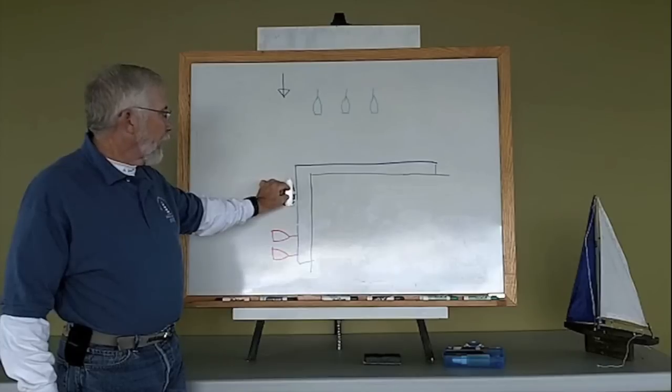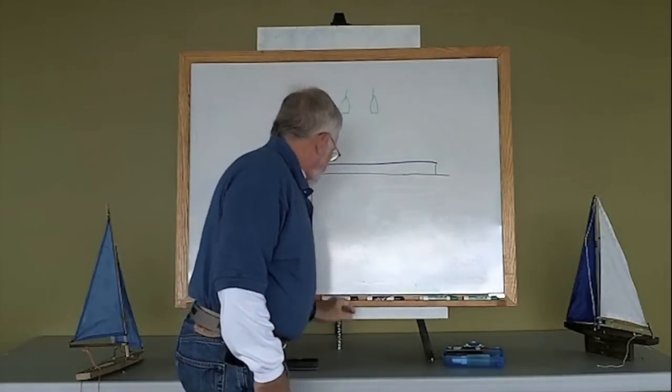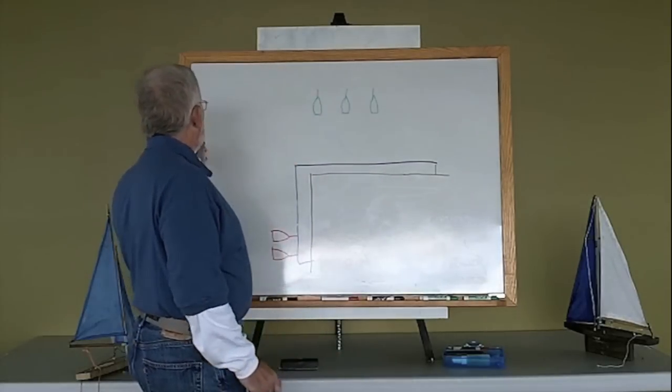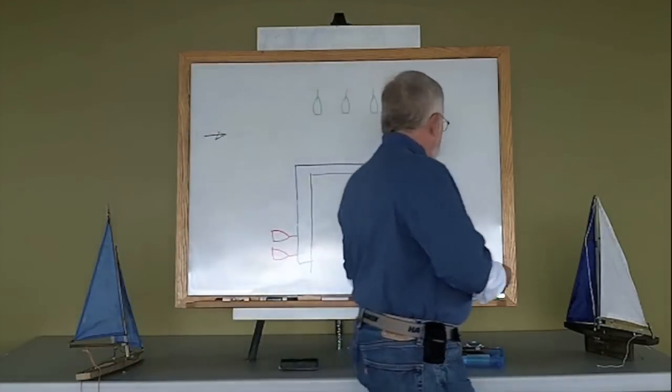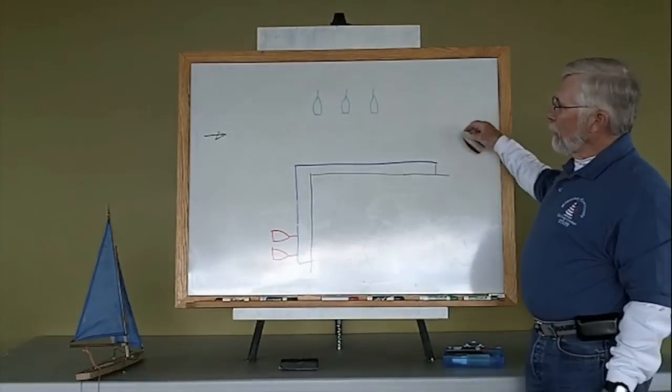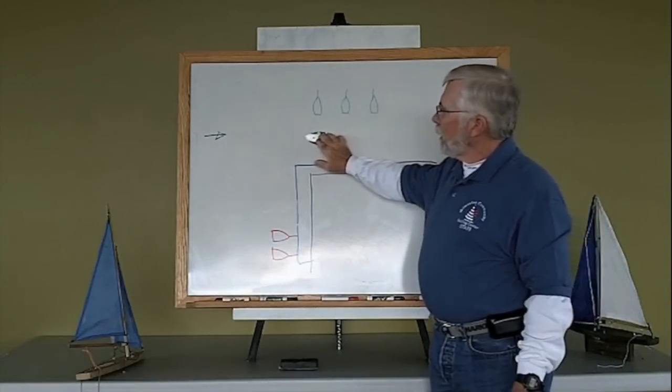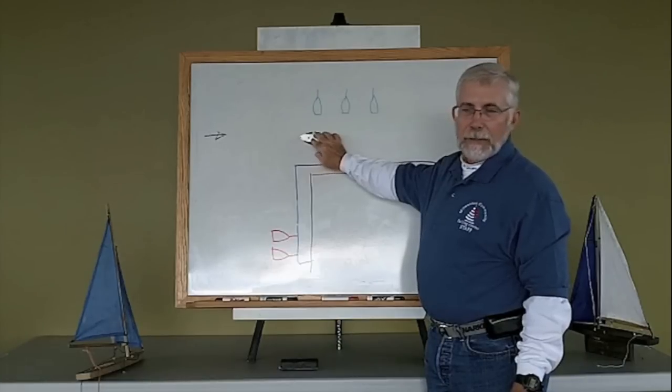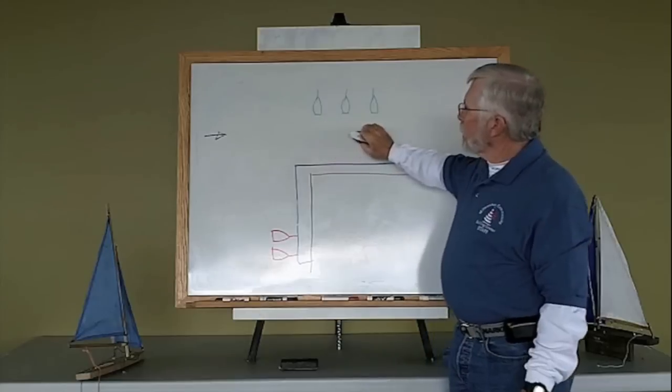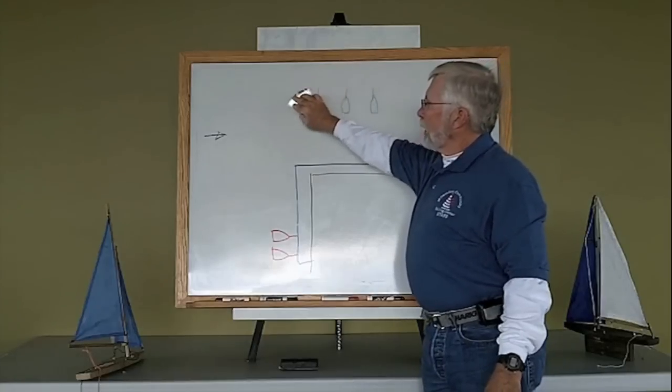Let's change the wind direction. The wind is now coming in this direction. I can't sail that way anyway, right? Because that's right into the no-go zone. So I will have had to sail up this way and come back down this way.